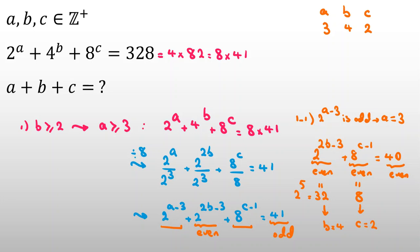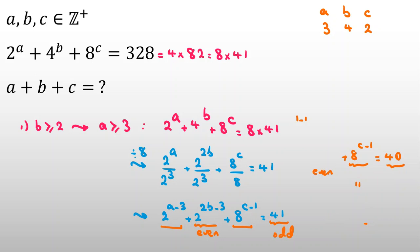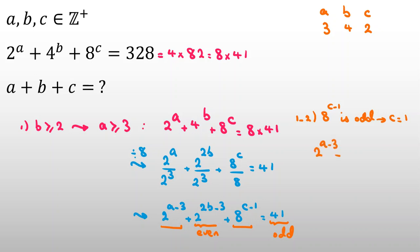Now let's consider Case 1.2: 8 to the (C minus 1) is odd. So C equals 1, making that term equal to 1. Then 2 to the (A minus 3) plus 2 to the (2B minus 3) equals 41 minus 1, which is 40.